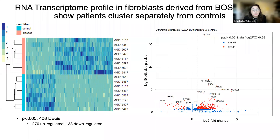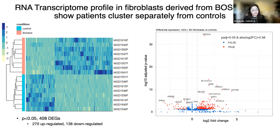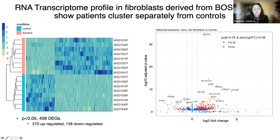One of the first things we were interested in was to look at fibroblasts and see how they cluster. What we would expect is that if you had blood from a patient with Bohring-Opitz versus a healthy control, you would see them separate out based on RNA expression. We have samples from patients with Bohring-Opitz, and they look quite different from our controls, which are parent controls — parents who provided blood samples at the same time.